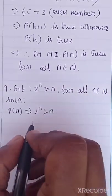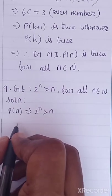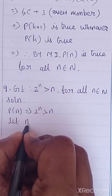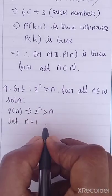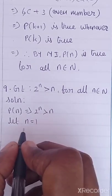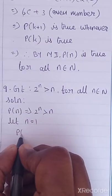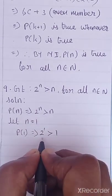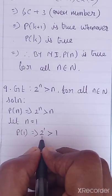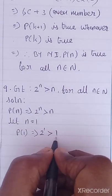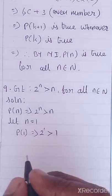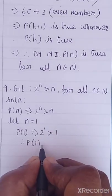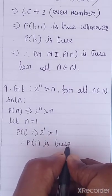Next step: let N equal to 1. So if we take N equal to 1, P of 1 implies 2 power 1 is greater than 1. Since 2 power 1 is 2, and 2 is greater than 1, therefore P of 1 is true.